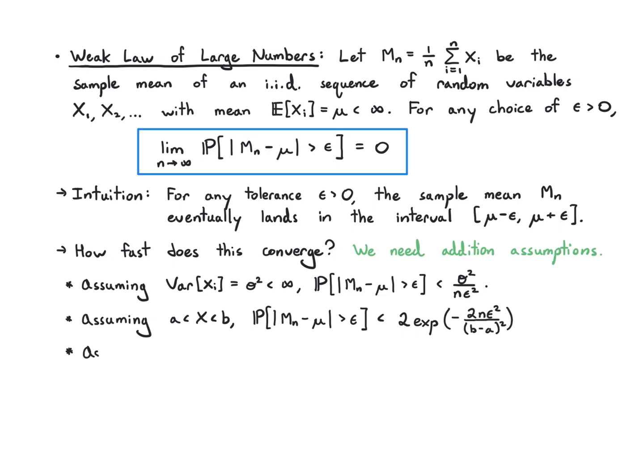So if we assume the random variables are bounded between a and b, then we can say that this goes down exponentially fast. Or we could say that the random variables are Gaussian with mean μ and variance σ squared. Then we can also say it goes down exponentially fast.